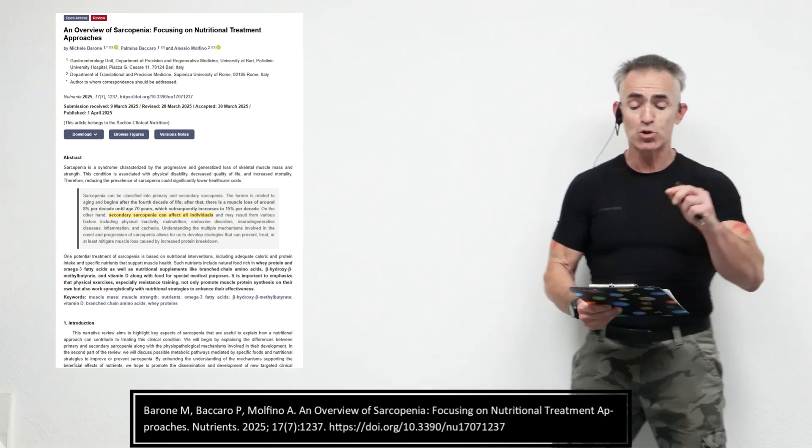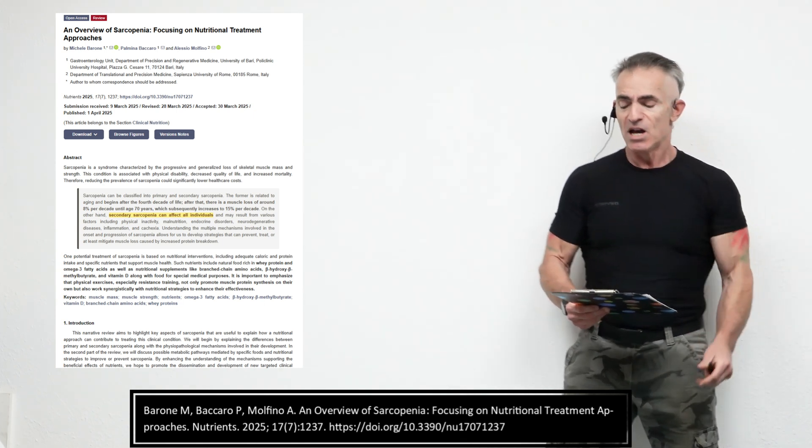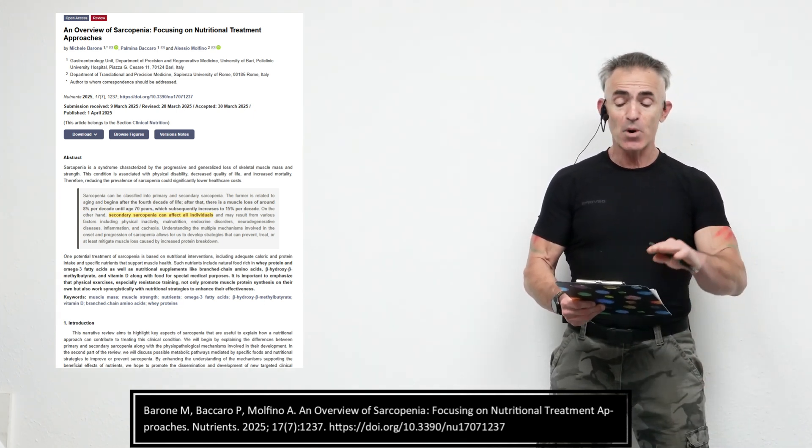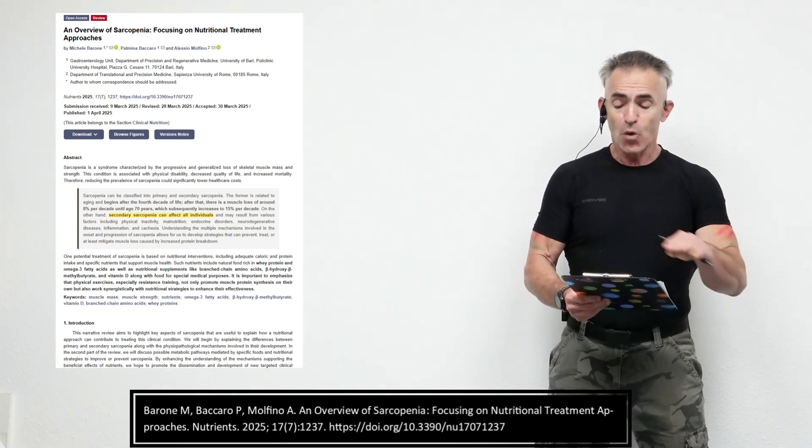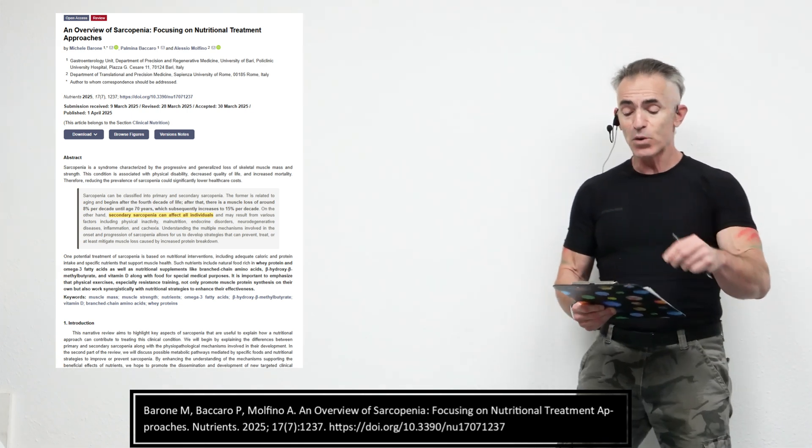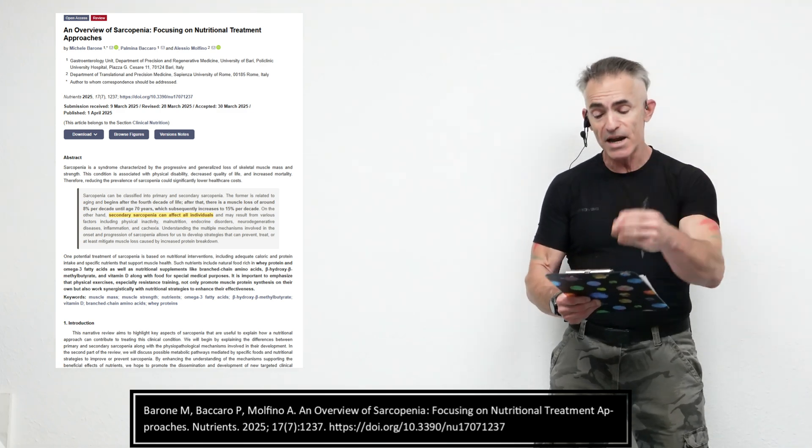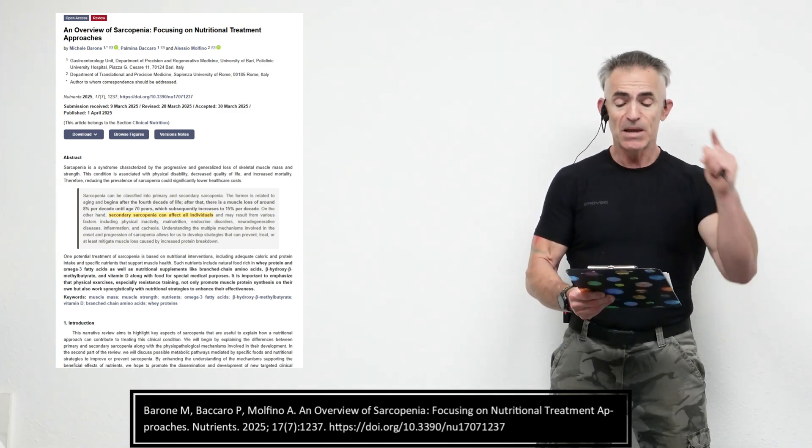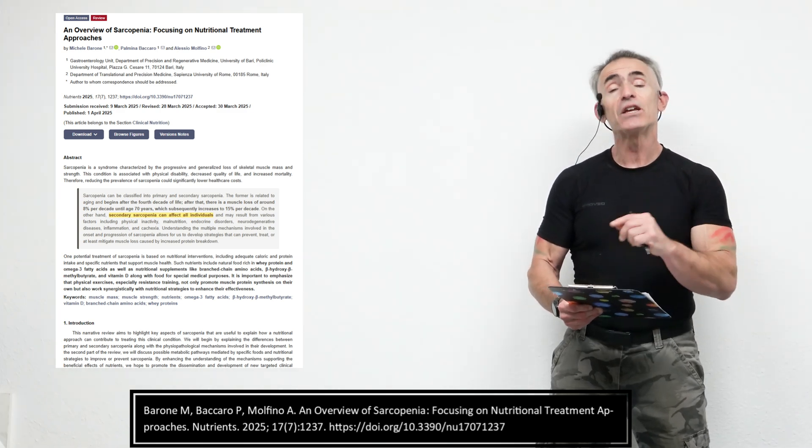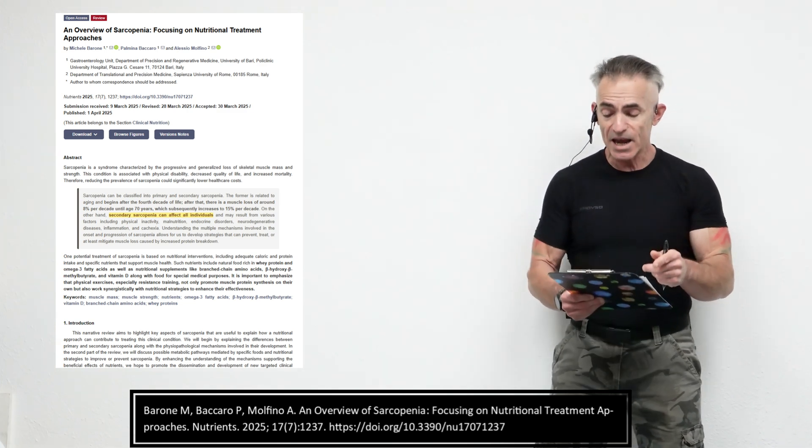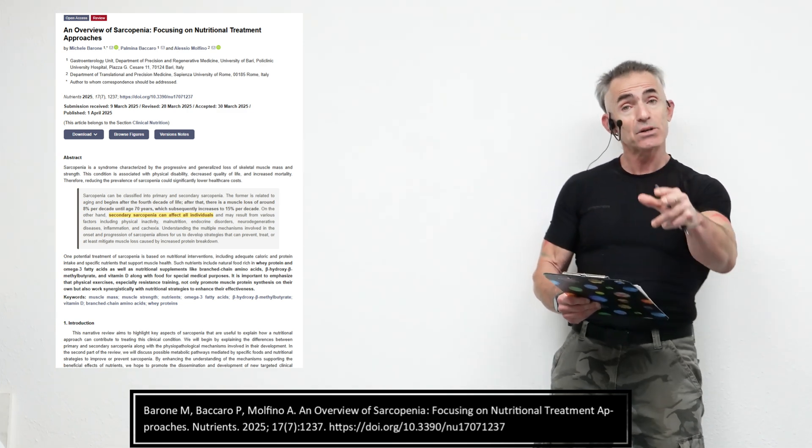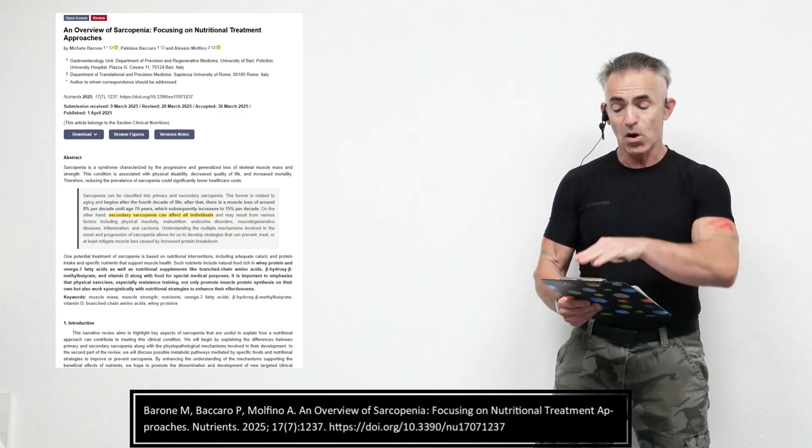An overview of sarcopenia focusing on nutritional treatment approaches. Sarcopenia can be classified into primary and secondary sarcopenia. The form is related to aging and begins after the fourth decade of life. After that, there is muscle loss around 8% per decade until the age of 70, which subsequently increases to 15% per decade. On the other hand, secondary sarcopenia can affect all individuals.